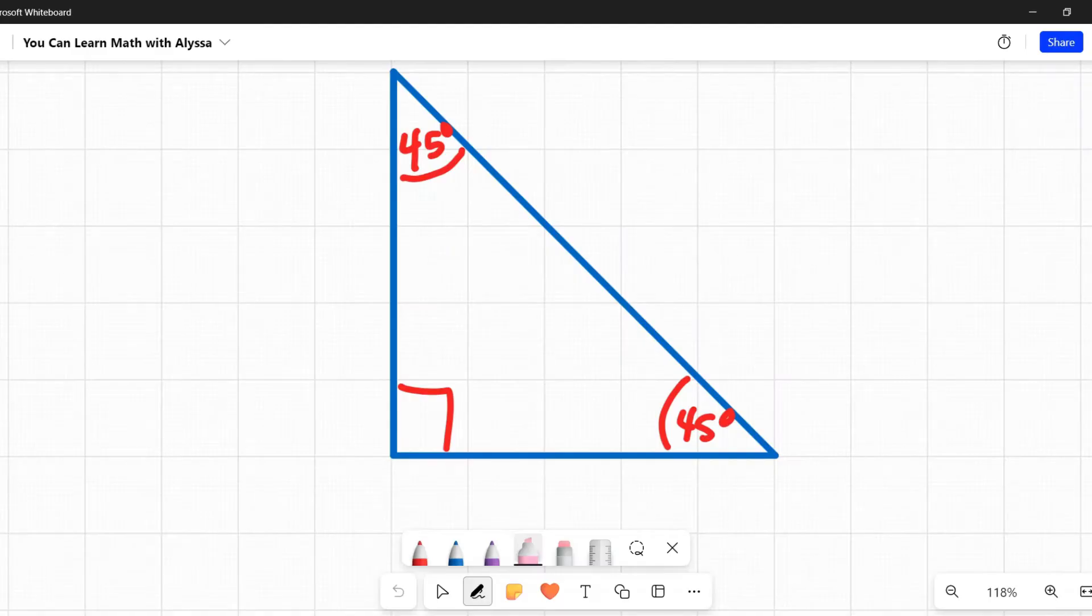The 45-45-90 triangle is a right triangle that has three angles measuring 45 degrees, 45 degrees, and 90 degrees.